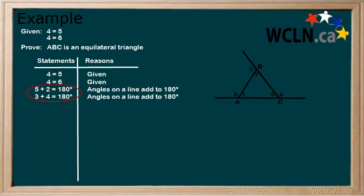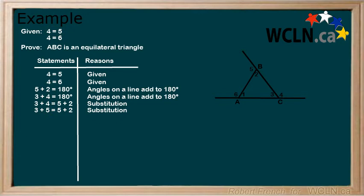Now, I see two statements equal to 180 degrees. We can make them equal to each other by substitution. At some point, we need to show that angle 3 equals angle 2. Therefore, let's see if there is a way to remove angle 4 and 5 from our statement. We can replace angle 4 by angle 5 by substitution, because we were told that angle 4 equals angle 5 as one of the given statements. Now, we get angle 3 equals angle 2 by subtracting angle 5 from both sides.